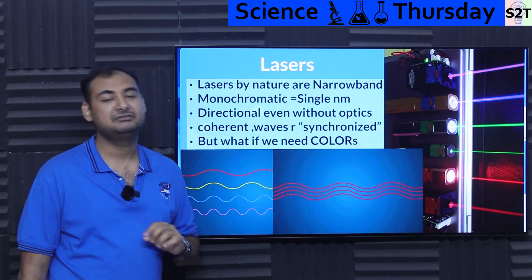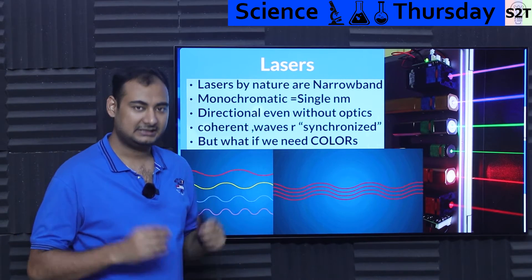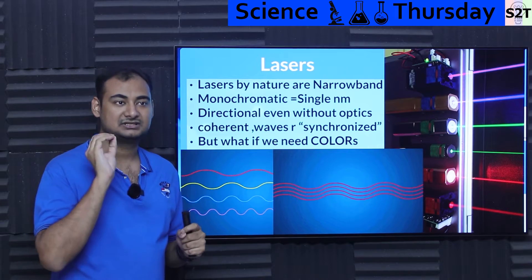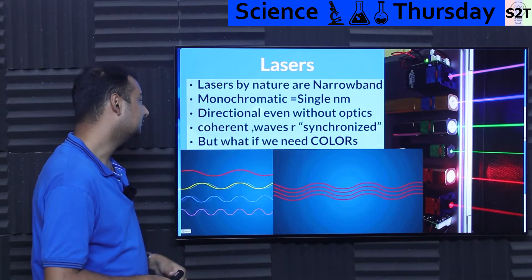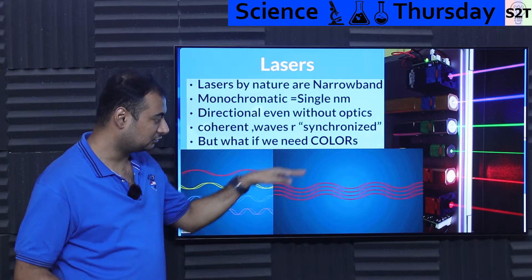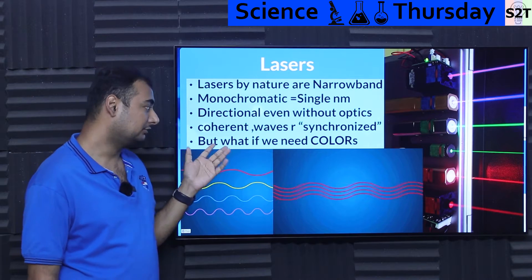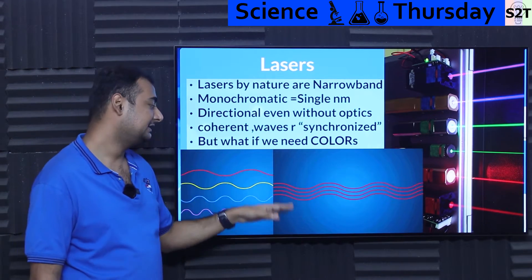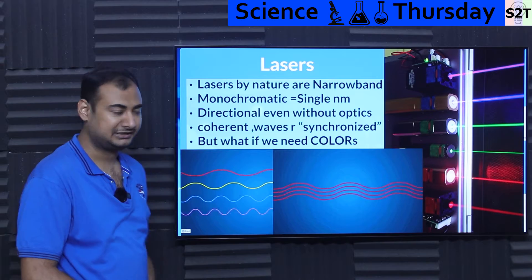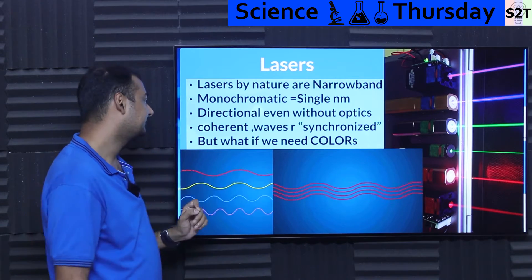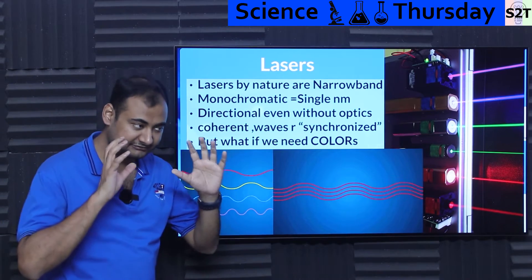Then we have directionality — even without optics. Many times you'll see lenses in lasers; they are there to improve the quality of the beam. Even if you just take the diode itself, like an actual silicon laser diode, it itself will give you a laser beam. It's just the quality would be sloppy. So directionality is there even without optics — the coherent nature itself is creating the beam; the optics is there to refine it. Then you have coherence itself, which actually allows you to do much higher communication. So these things — monochromatic, directional, and coherent — are fundamental physical properties of laser.